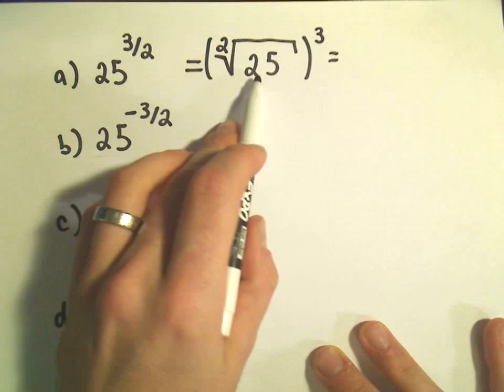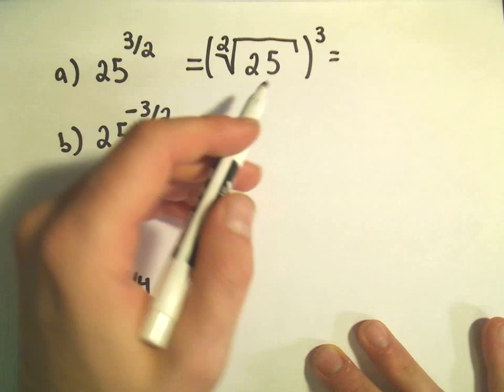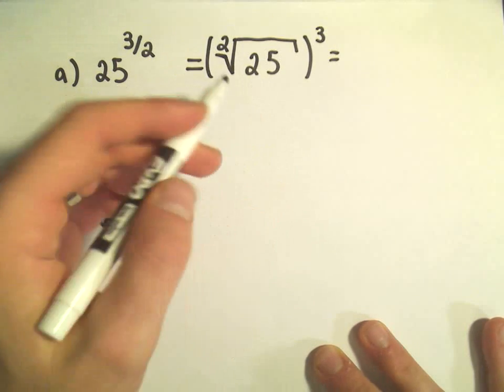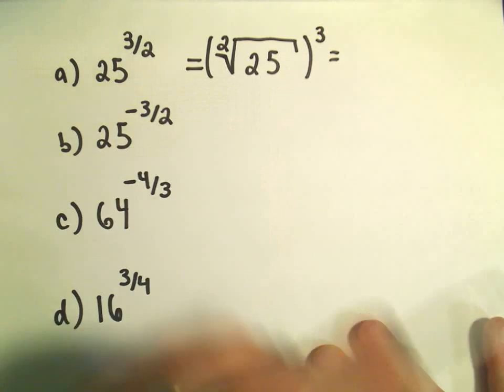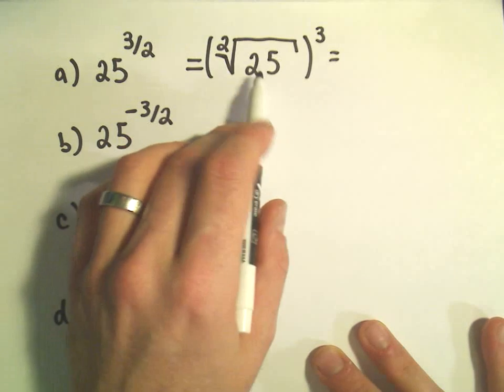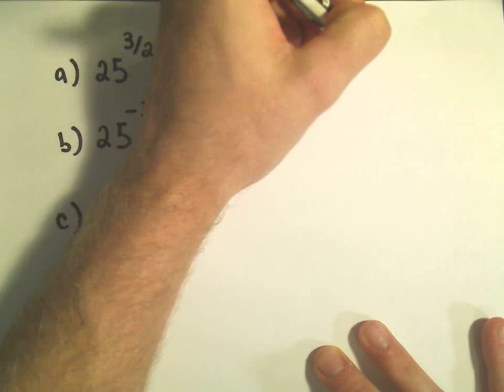And then I think, what is the square root of 25? The square root of 25? Remember, a square root, any even powered root, is always a positive number. So the square root of 25 is positive 5.